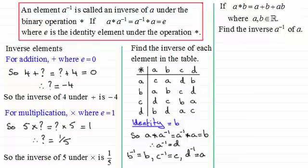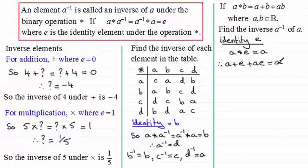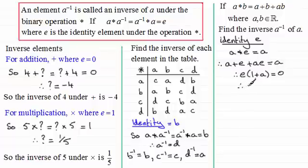The first thing we need to do is work out what the identity element is for this binary definition. We'll call that element E. So if we take a and combine it with E we'd expect to get back a — it leaves the element unchanged. Using the definition, we replace b with E and get a plus E plus aE equals a. Subtracting a from both sides leaves E plus aE equals 0. Factorising gives E times (1 plus a) equals 0. So it must be E that equals 0 — therefore E equals 0.